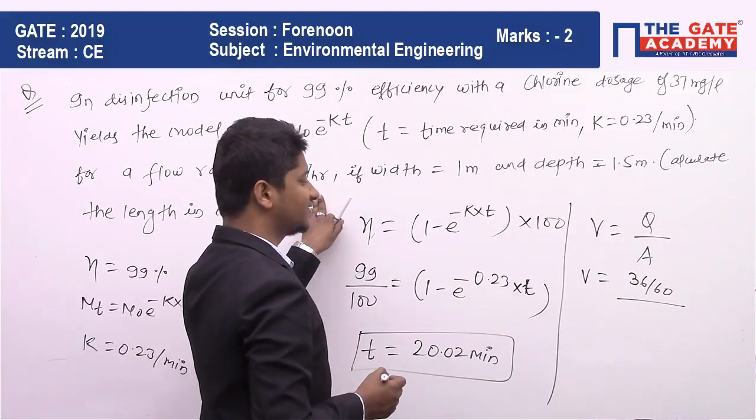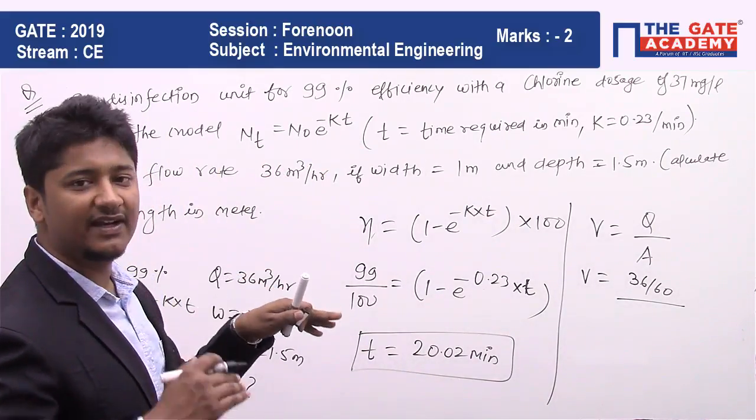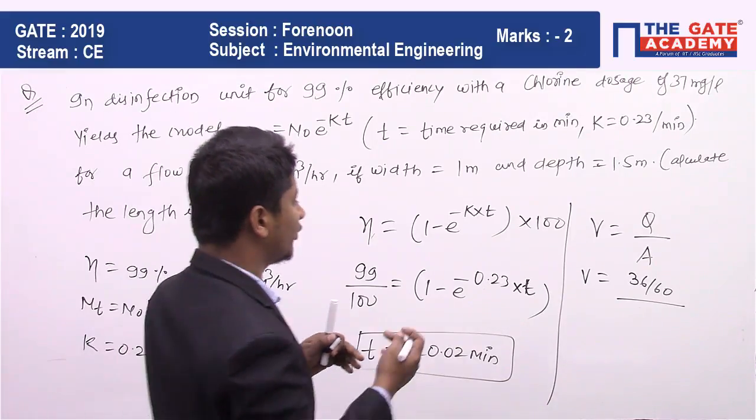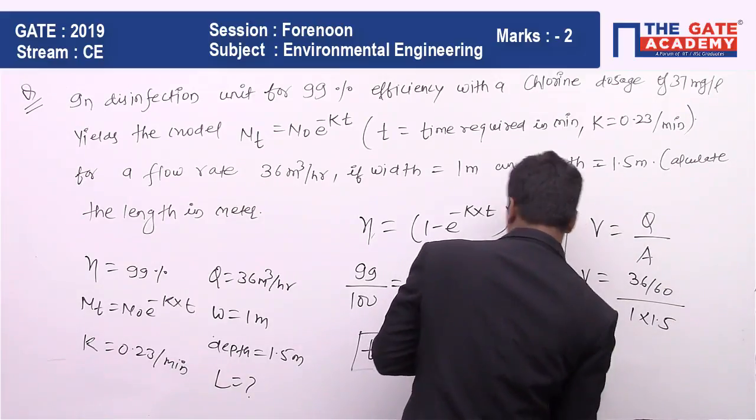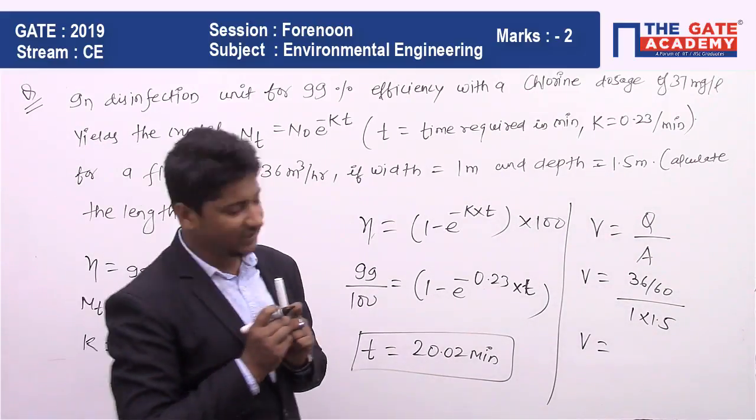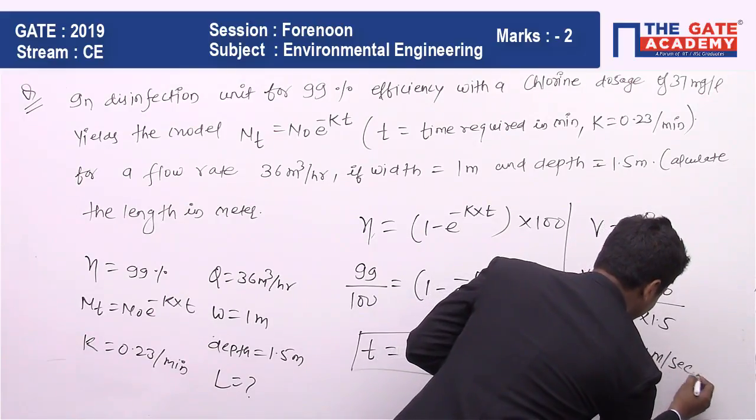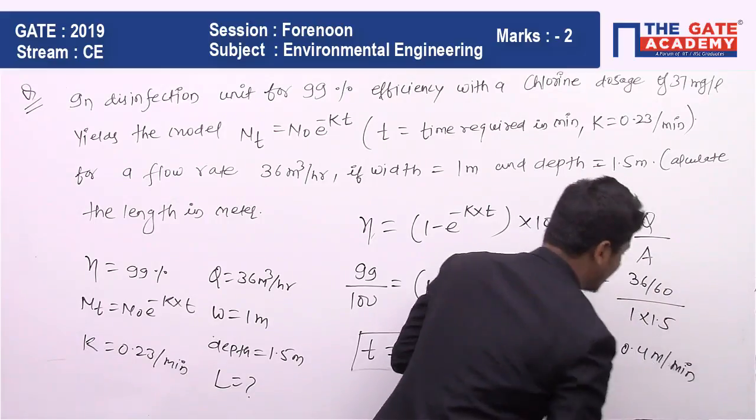36 by 60 because 1 hour equals 60 minutes. A is given in terms of width and depth, so width is 1 meter, depth is 1.5 meter, so 1 into 1.5. And the value of V which you are getting after calculation is nothing but 0.4 meter per minute.